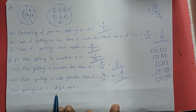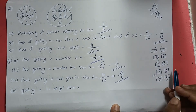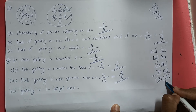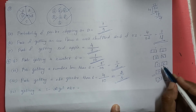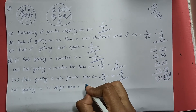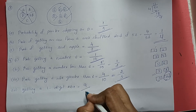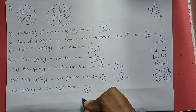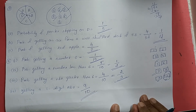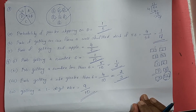Getting a one digit number: everything from 1 to 9 is a one digit number, apart from 10. So there are 9 one-digit numbers divided by total outcomes which is 10. The probability is 9 by 10.